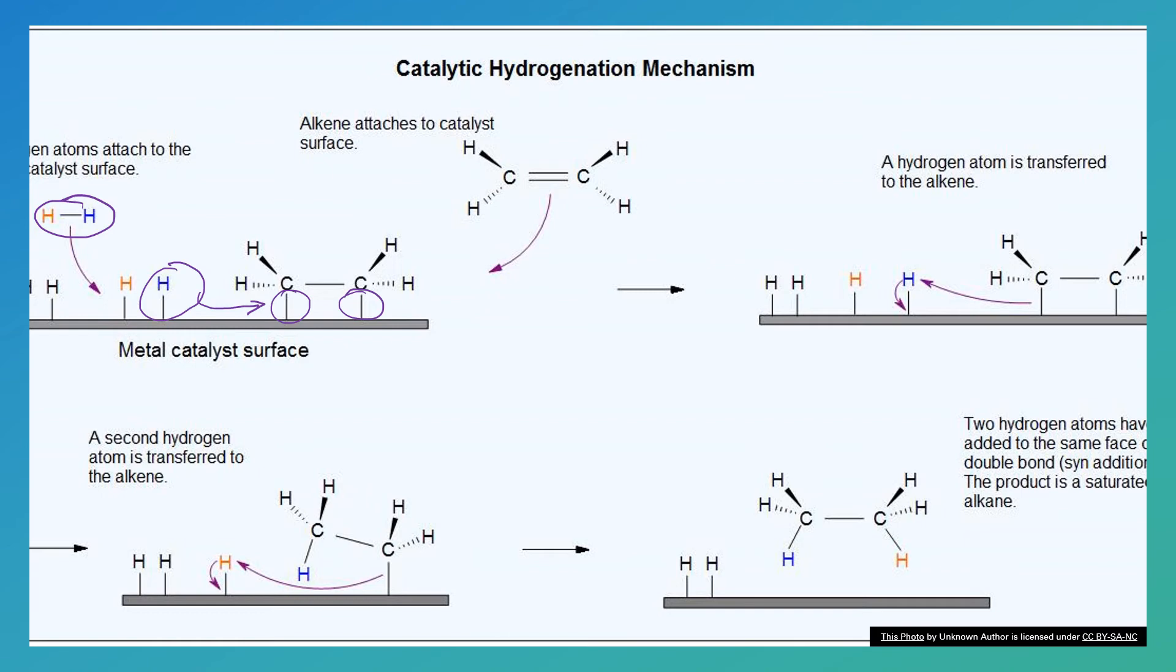And then if we have that same thing happen down here in the bottom to the other carbon atom, and we create a bond between the carbon and the hydrogen, then the molecule, what used to be the alkene, desorbs from that catalyst surface as an alkane. And this process is much faster due to that high surface mobility of the hydrogen atoms than waiting for the gas phase collisions to make this reaction take place.